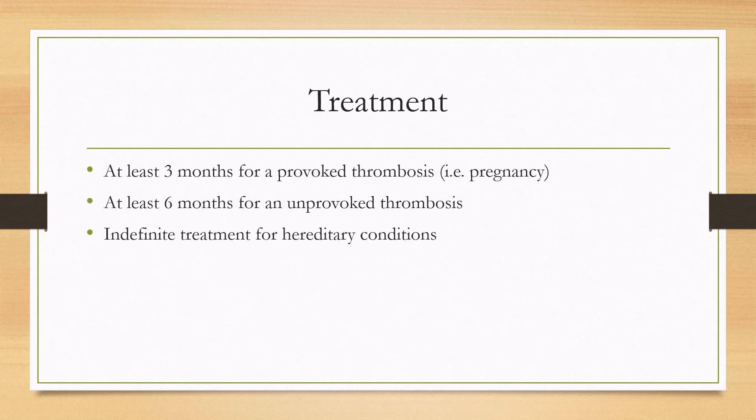In terms of duration of treatment: for a provoked thrombosis, such as in the presence of pregnancy, you'll treat for at least three months. For an unprovoked thrombosis where no risk factors can be found, you'll treat for six months. If one of the hereditary diseases is found, such as factor V Leiden, the patient will need indefinite treatment.